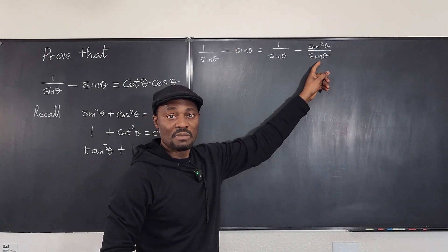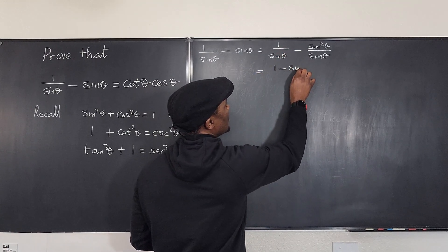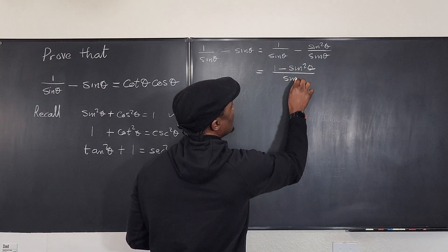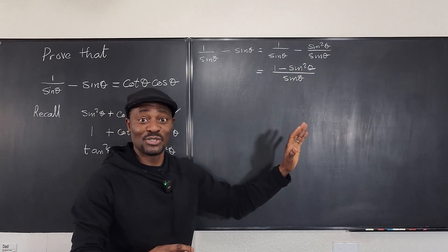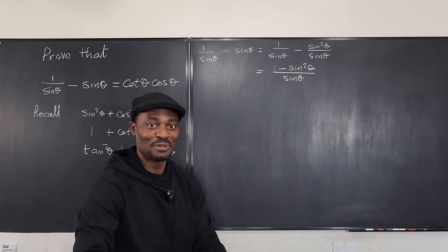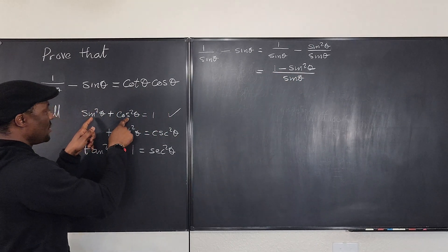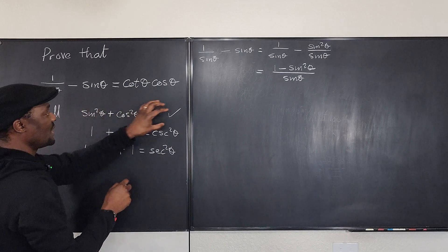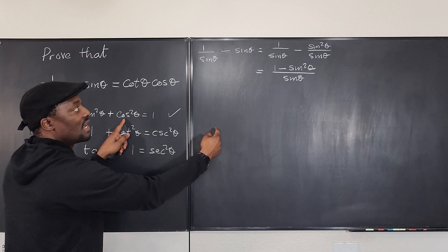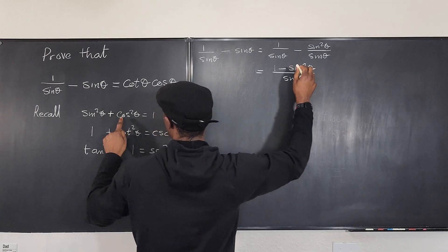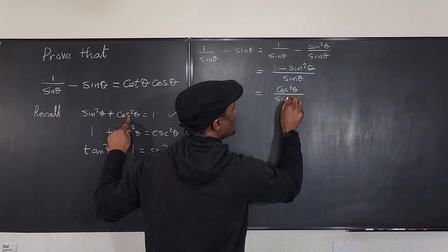Now they have the same denominator, so I add the numerators: this equals (1 − sin²θ)/sinθ. Now 1 − sin²θ — we've gone from subtraction and will automatically go to multiplication. From the Pythagorean identity, if I move sin²θ over, I get cos²θ = 1 − sin²θ. So I replace this with cos²θ, giving me cos²θ/sinθ.